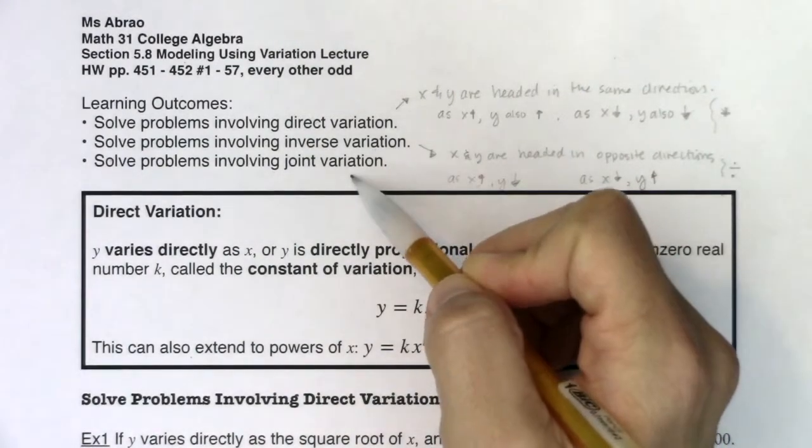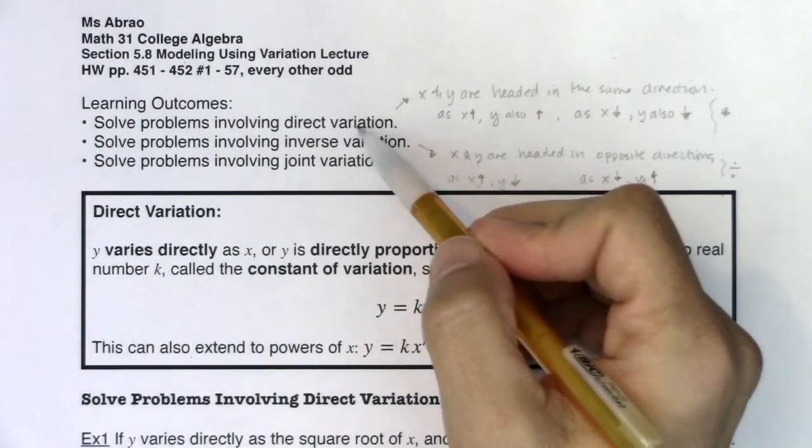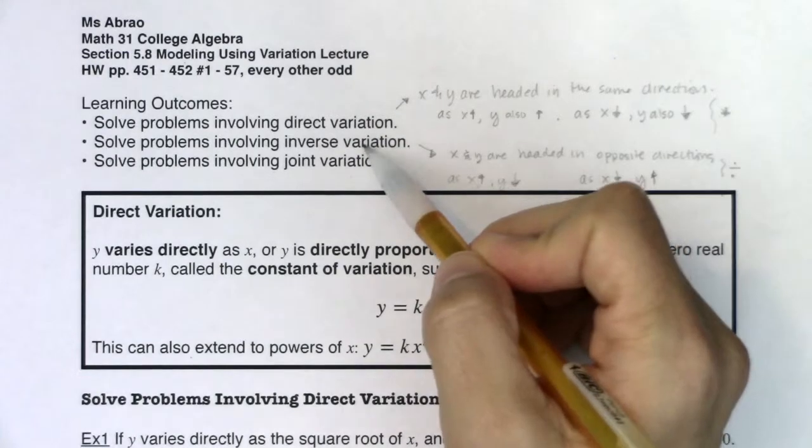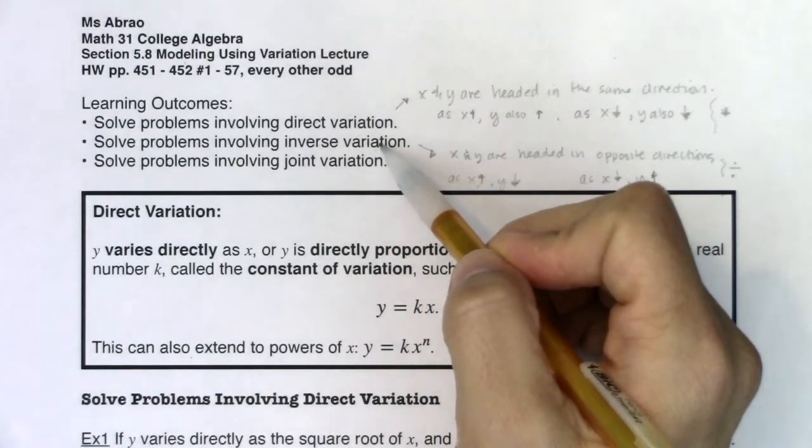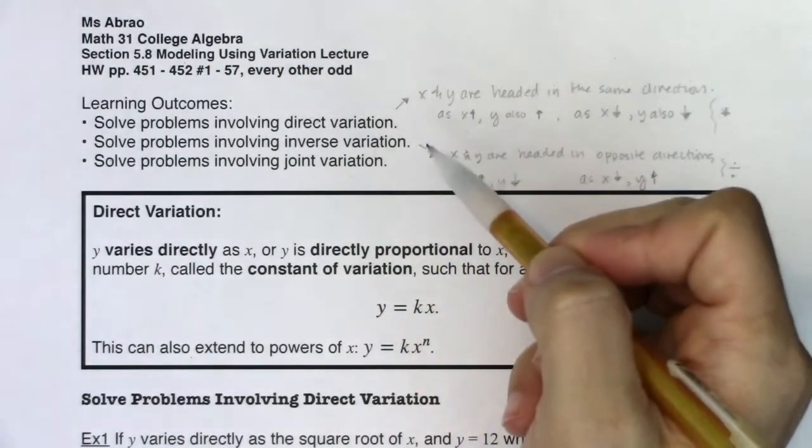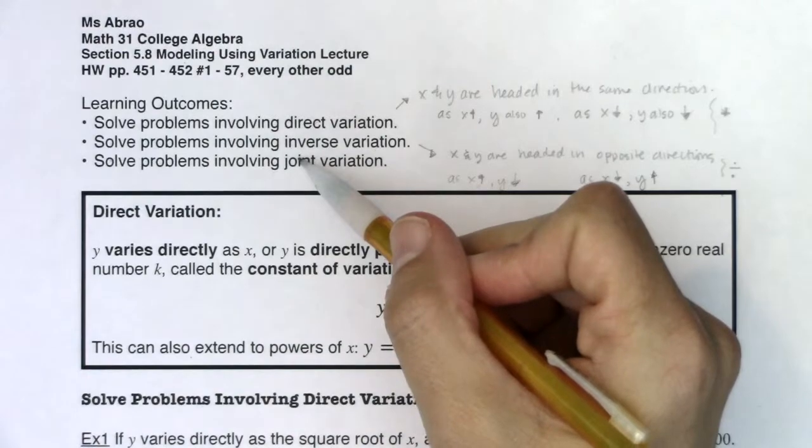And when you hear me talk about joint, it's trying to convey that I'm combining these. I might have a couple of direct variations with an inverse. Maybe I have a couple of inverses. Maybe I have three directs, one inverse. It just depends on the wording of the problem. But joint just means that there's more than two variables in play.